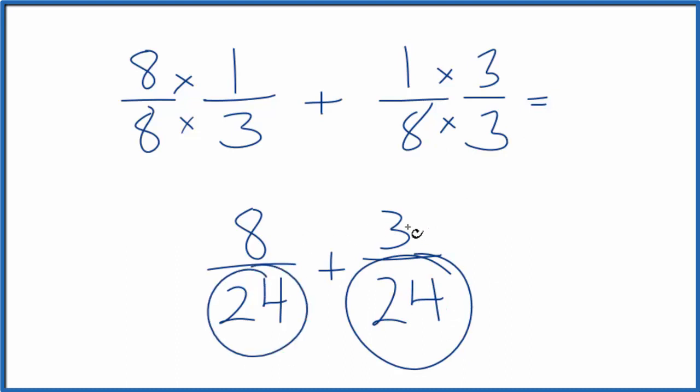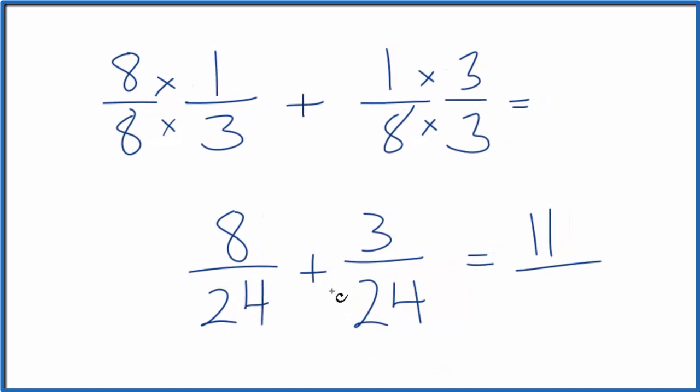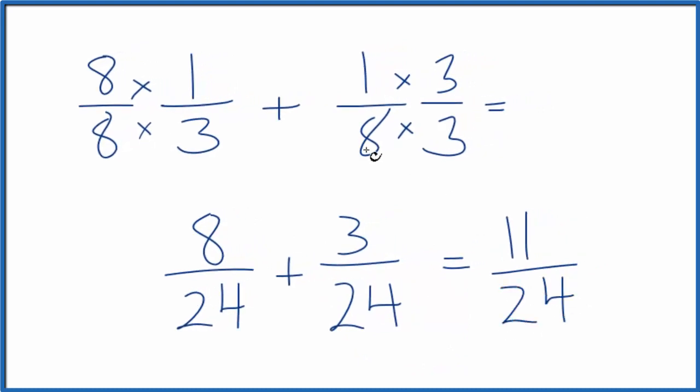Now we have the same denominator. We can add these fractions. Eight plus three is eleven, and then we bring the twenty-four over. So one-third plus one-eighth equals eleven twenty-fourths.